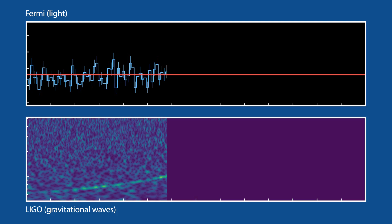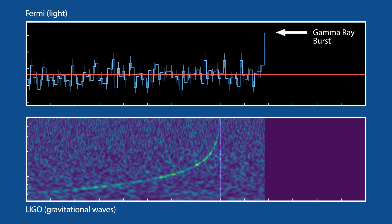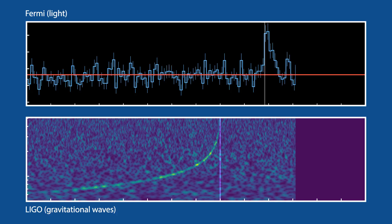On August 17, 2017, a gravitational wave chirp was recorded by the National Science Foundation-funded LIGO observatories, and less than two seconds later, a short burst of gamma rays, a high-energy form of light, was detected by NASA's Fermi telescope.